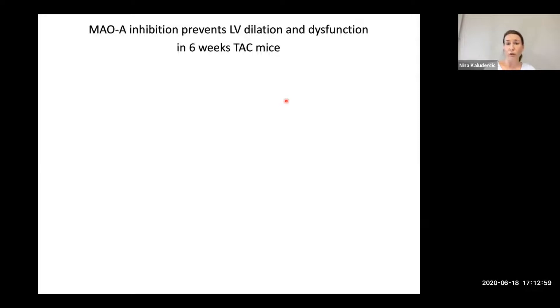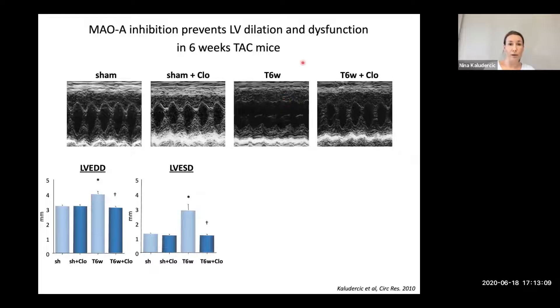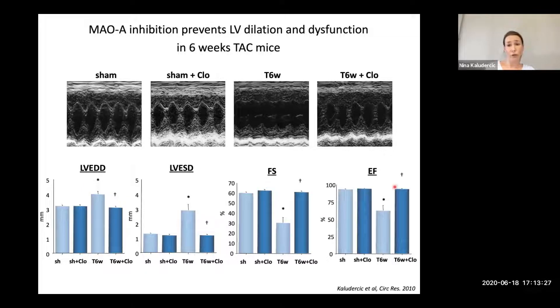To answer this question, we used mice subjected to pressure overload by transverse aortic constriction. After six weeks of TAC, we had parallel groups treated with vehicle or with the specific MAO inhibitor clorgyline. As expected in pressure-overloaded mice, we saw an increase in end-diastolic and end-systolic dimensions, a decrease in fractional shortening and ejection fraction. But remarkably, mice injected with clorgyline were basically protected from this damage — LV dilation and cardiac dysfunction were completely prevented.